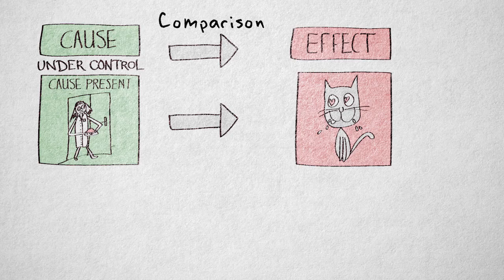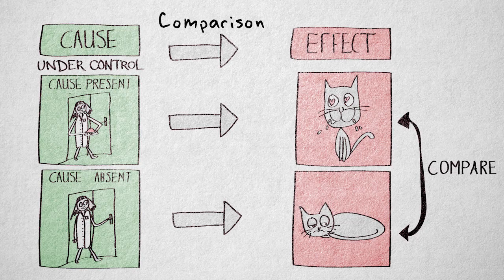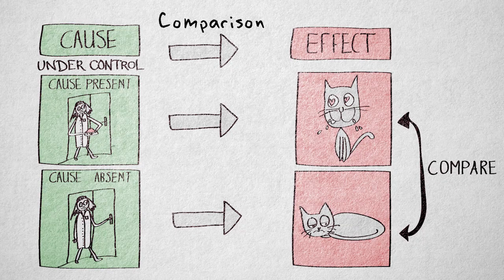What about comparison? Causality is even more plausible if you can compare to a situation where the cause is absent, showing that the effect does not occur when the cause is absent. This also eliminates the threat of maturation.